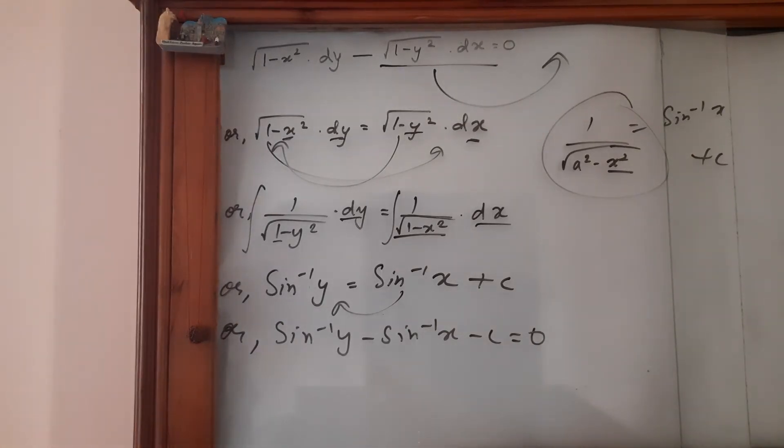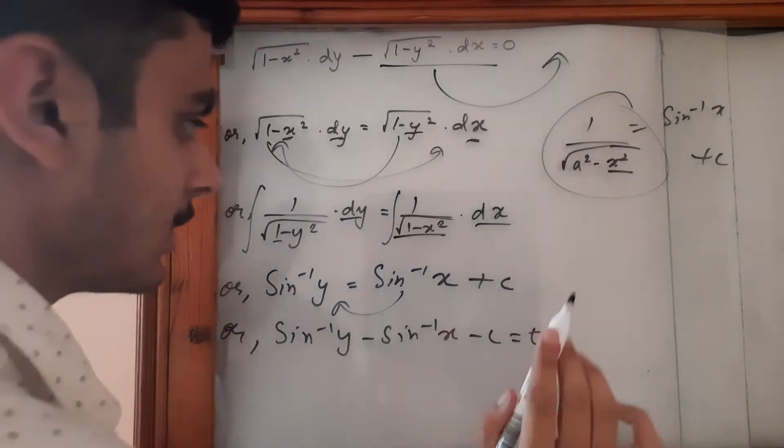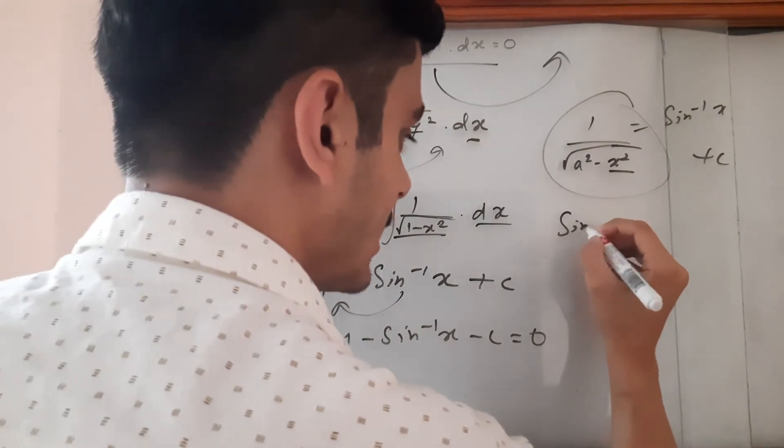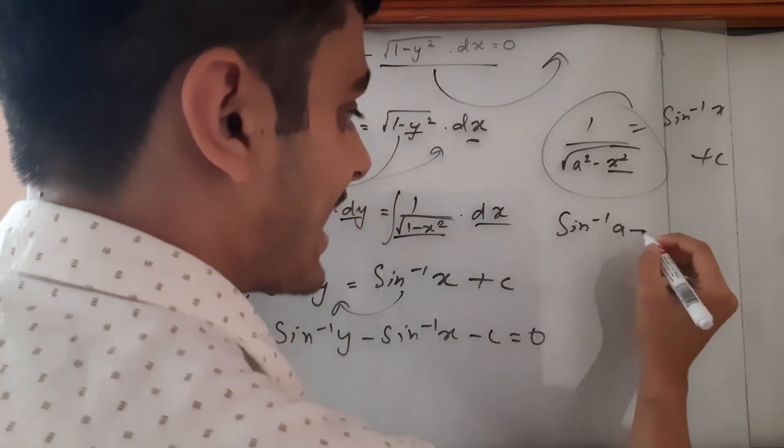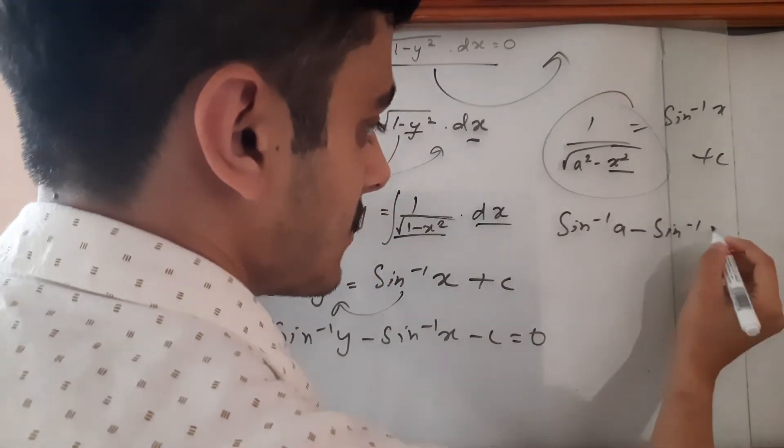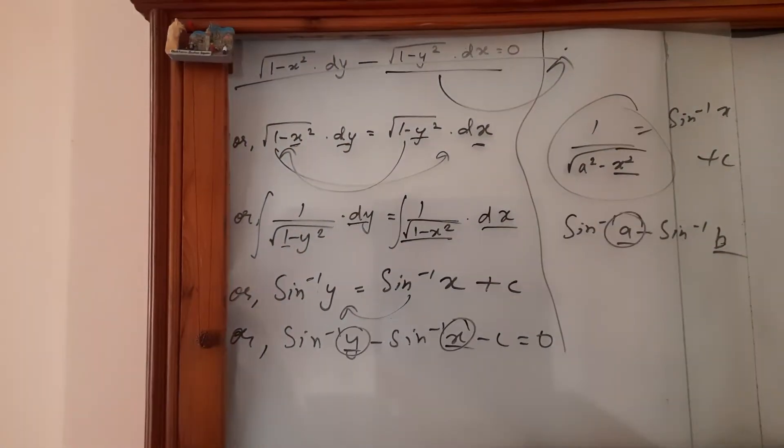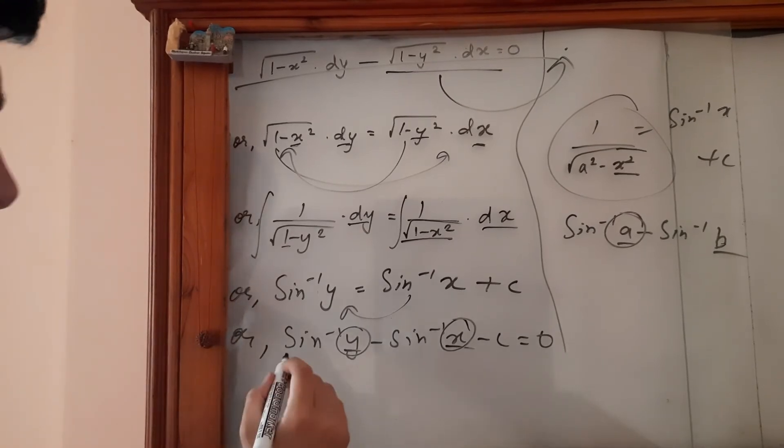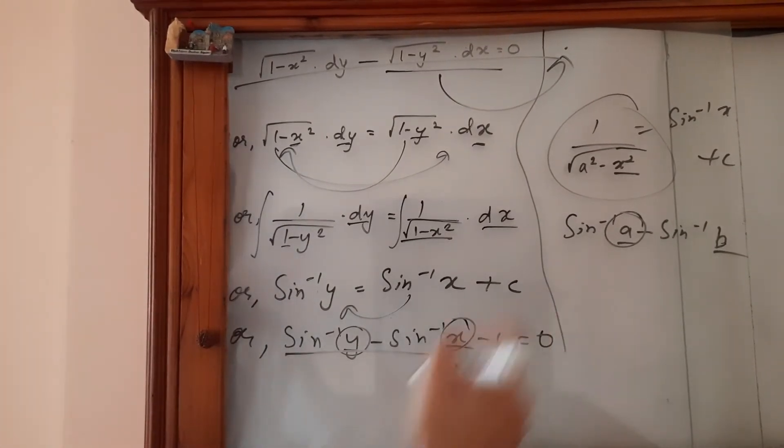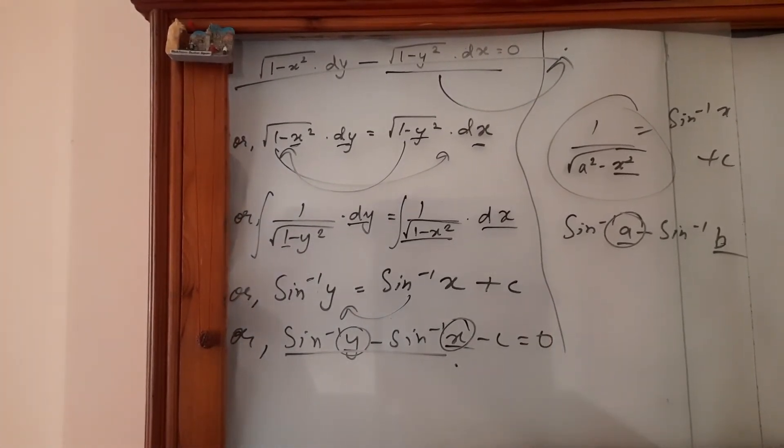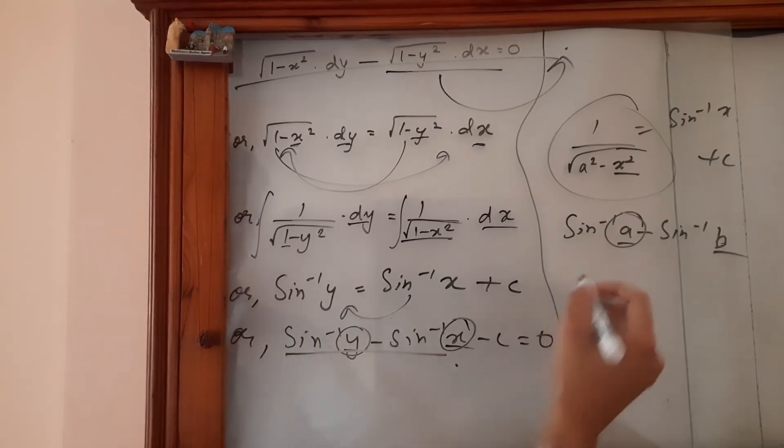So that way what we can do is we can pull them in the form of formula, that way in the form of sin inverse a minus sin inverse b. So we would get sin inverse y times sqrt(1 minus x squared). I hope you know this trigonometric formula is equal to, let's take c on the other side. So if we take this sin inverse to the other side, what we can do is we can just remove this thing.